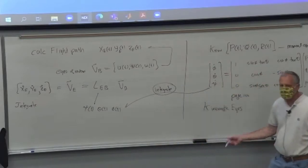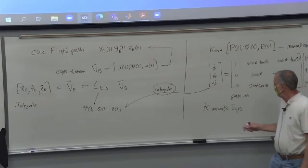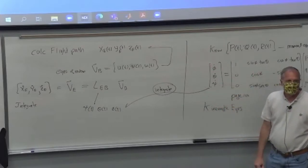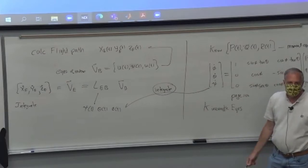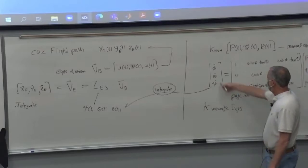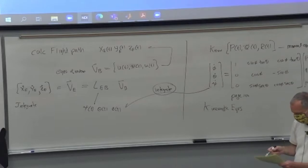These are called the kinematic equations. Dynamics refers to forces acting on masses or moments acting on inertias. Kinematics just relates to the position of something relative to the position in another place. So this is representing these rates to these rates, and it doesn't have anything to do with forces acting on masses or moments acting on inertias.